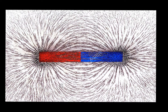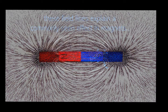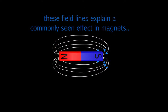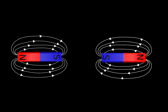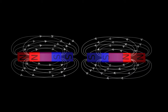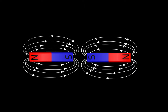Here's another magnet with the magnetic dust, and you can get a visual of those magnetic lines. These field lines explain a commonly seen effect in magnets. For example, when you have like poles — a south and a south coming together — notice what happens to those magnetic field lines.